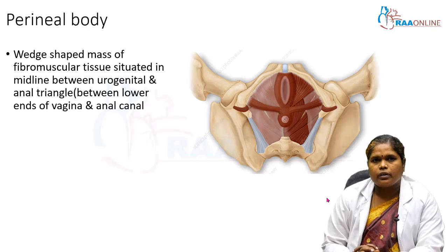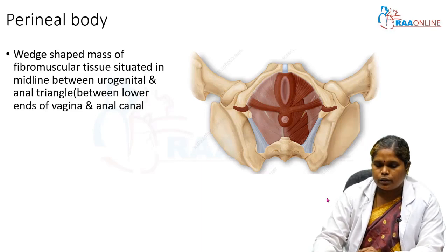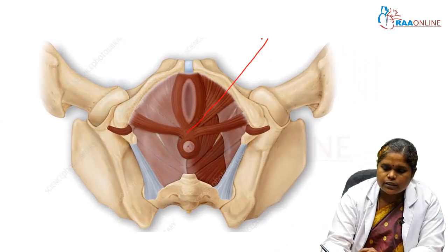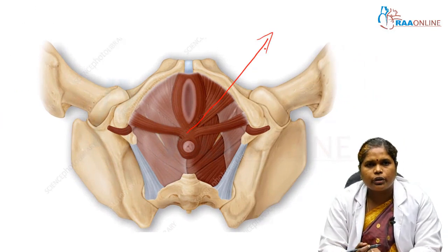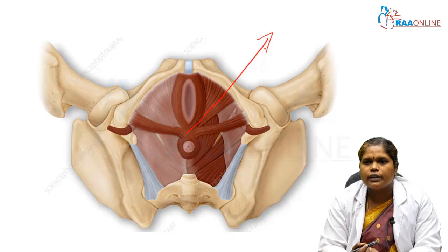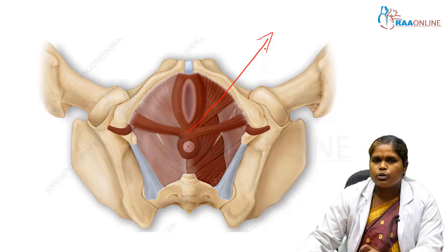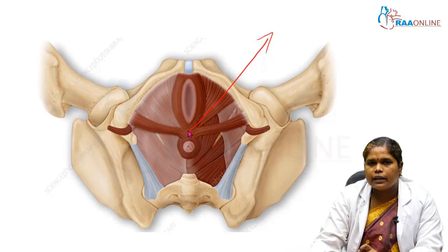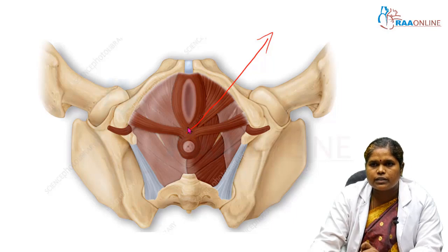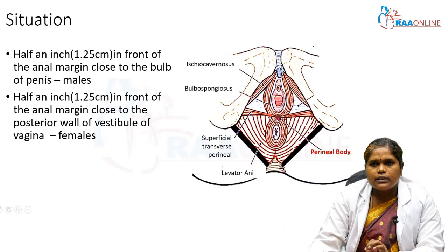The perineal body is a wedge-shaped mass. You can see this structure here — this is the perineal body. It is a wedge-shaped mass of fibromuscular tissue situated in the midline between the urogenital triangle and the anal triangle, that is between the lower end of the vagina and the anal canal. This region is the location of the perineal body. You can see a fibromuscular nodule — this is the perineal body.